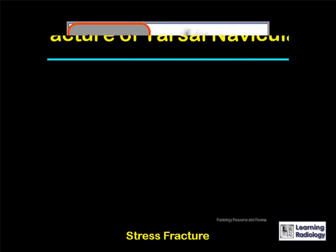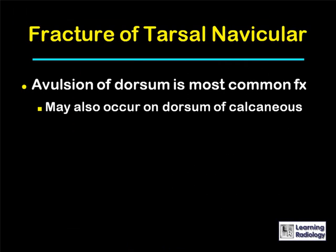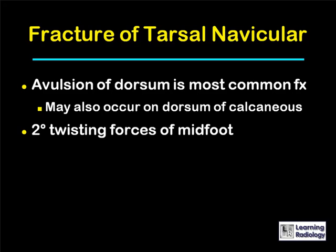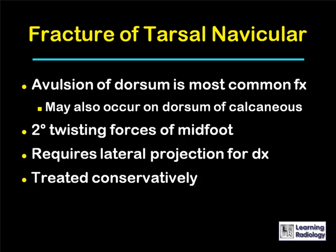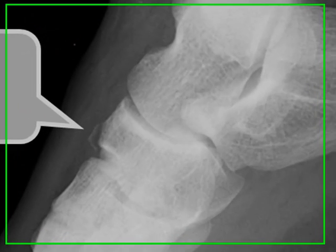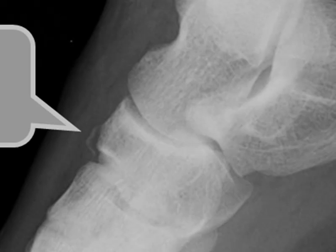Fractures of the tarsal navicular usually are avulsions of the dorsal aspect. There may also be avulsions of the dorsal aspect of the calcaneus as well. These are secondary to twisting forces of the midfoot. They require a lateral projection on conventional radiography in order to be seen, and they tend to be treated conservatively. This is an avulsion fracture of the dorsal aspect of the tarsal navicular — you can sometimes see the same finding along the dorsal aspect of the calcaneus.